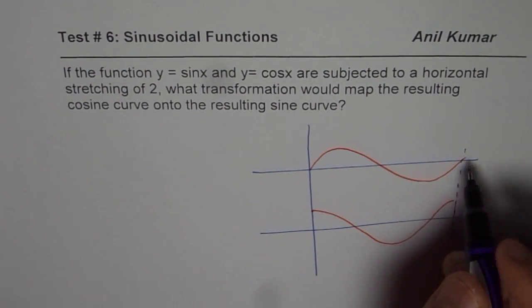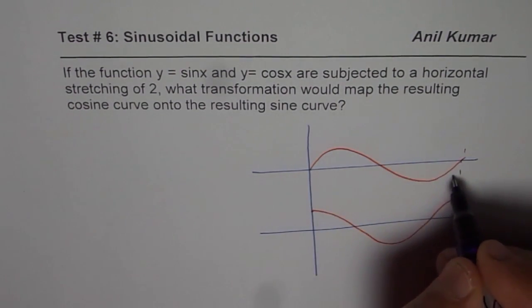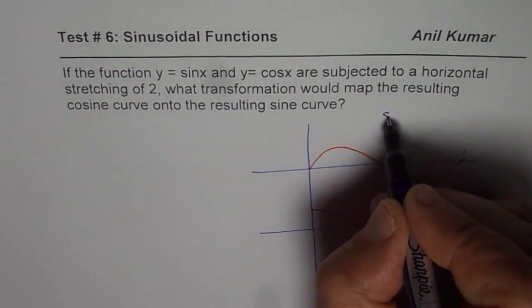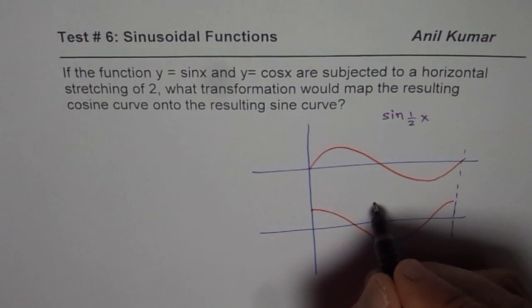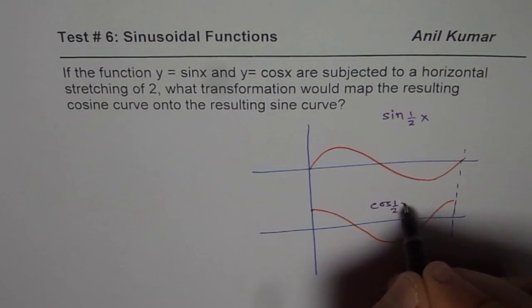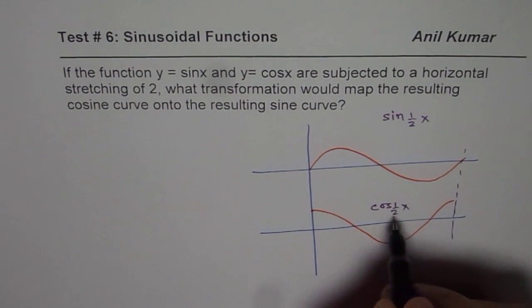then what is the time period? Normally it is 360, but when stretched by 2, that means we are talking about sine of half x or cos of half x, correct? That is stretching horizontally by a factor of 2.